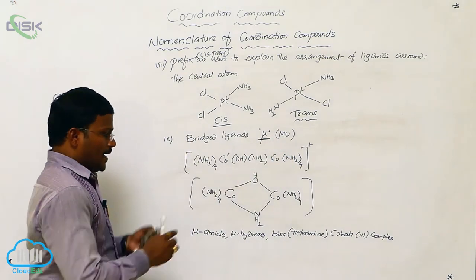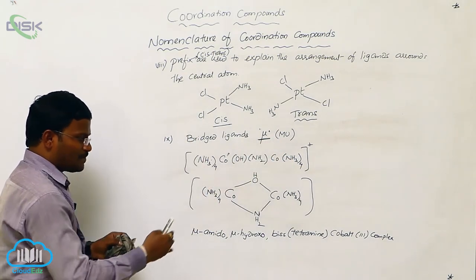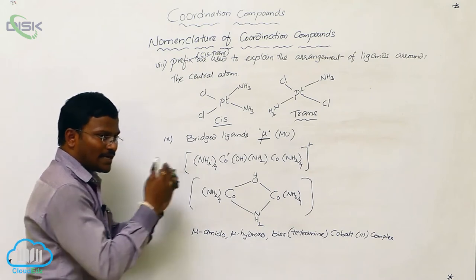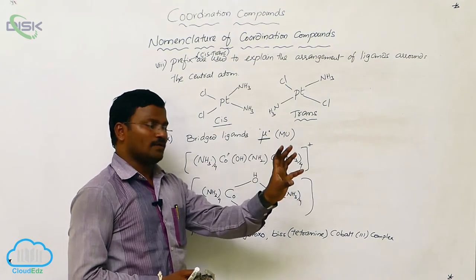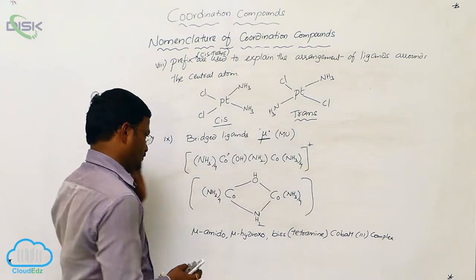Second one, inside of the coordination sphere, ligands and metal atoms are present. So, first we have to write the name for the ligand followed by the name for the metal atom.